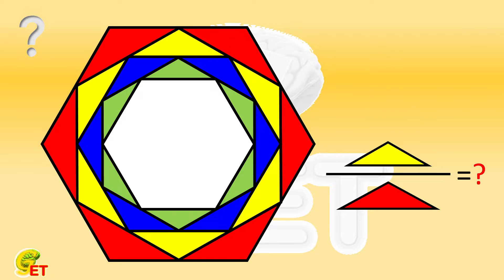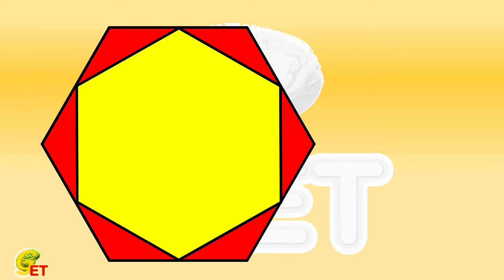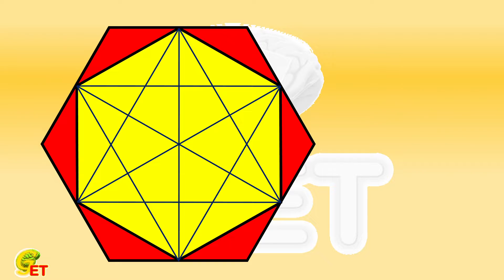If we haven't learned about similar polygons, the common method of addressing such questions is to cut the figure, specifically, to try to cut it into equal parts for comparison. For this one, we first connect the diagonals of the yellow regular hexagon, and then we add another auxiliary line here.